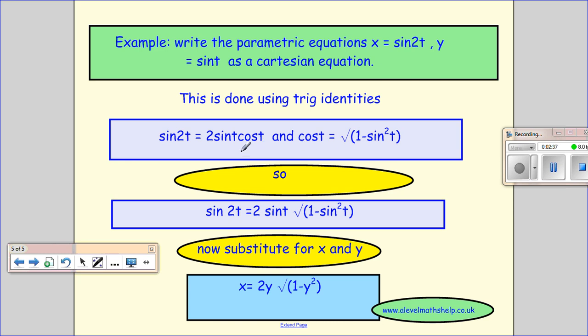And so I can get my cos t from that, so cos t will equal the square root of 1 minus sine squared. So putting these two together, I get sine 2t equals 2 sine t square root of 1 minus sine squared t.